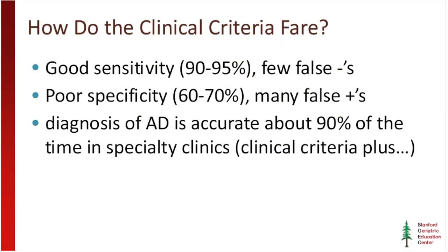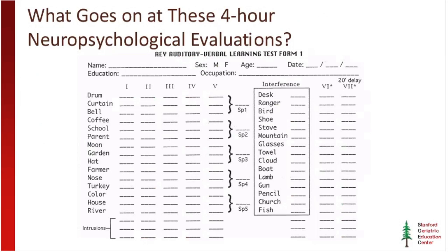In referral centers like the Stanford Center for Memory Disorders, where we see patients with memory or cognitive complaints, the diagnosis of Alzheimer's disease is accurate somewhere between 85 and 90 percent of the time — meaning the clinical diagnosis matches the gold standard at post-mortem. We do a little better in part because of standard clinical criteria plus added expertise, foremost among which is neuropsychological testing, which here at Stanford we have the luxury of using.